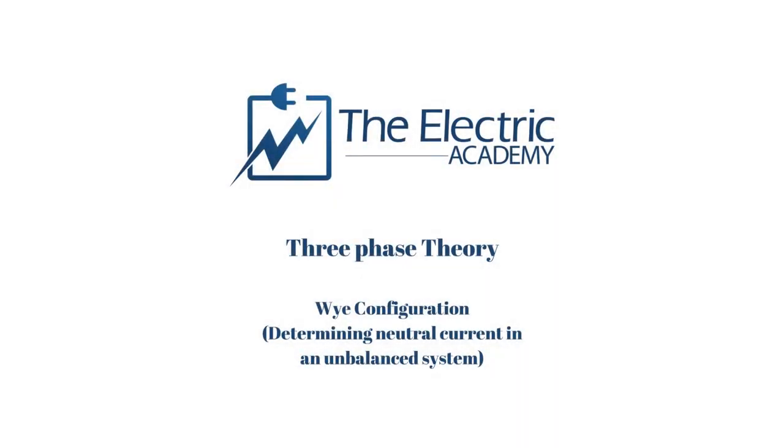In this video we're going to be looking at determining the neutral current in an unbalanced system. If you go back and watch the video on Y configuration or star configuration determining neutral current in a balanced system, you see that the currents in a neutral always end up being zero amps and we prove that through vector algebra. The same thing holds true when we are discussing current in an unbalanced system - we still have to use that vector algebra and I'll prove it to you.